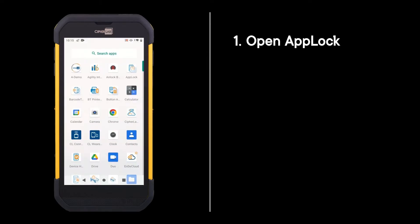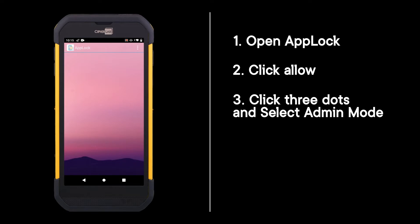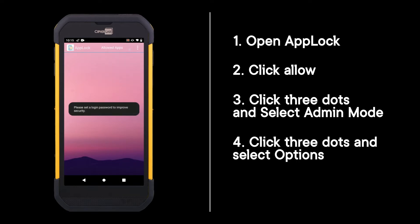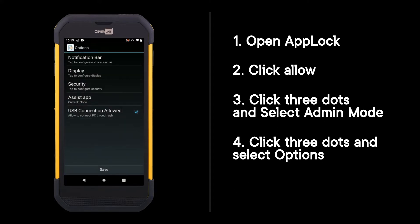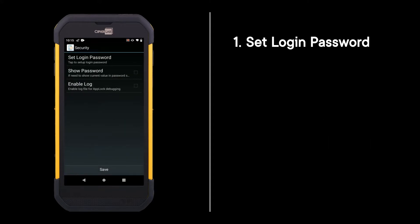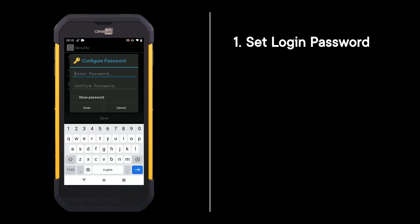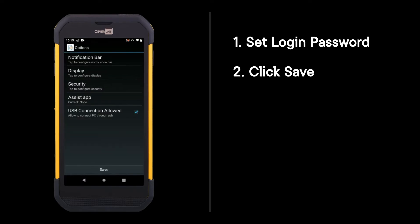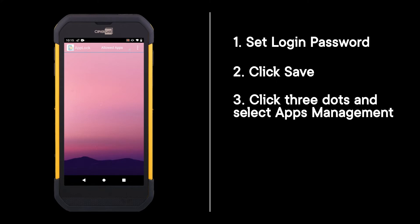Open App Lock, click Allow, click the three dots and select Admin Mode. Click the three dots and select Options, then select Security. Set the login password, click Save, then click the three dots and select Apps Management.